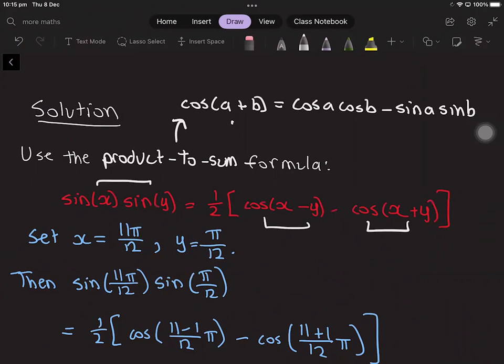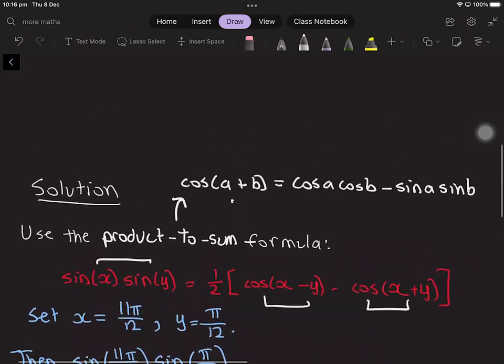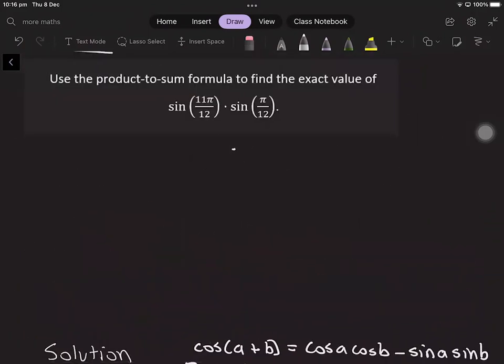And now in this formula we will set x to equal 11π over 12 and y to π over 12. So this can be used to find this expression over here with these values substituted.